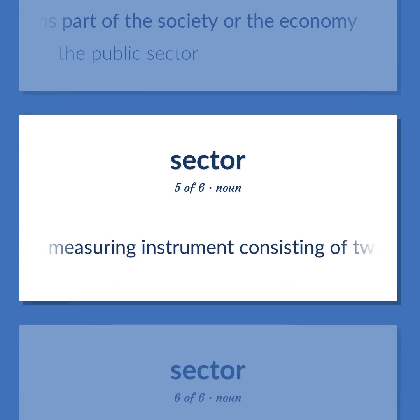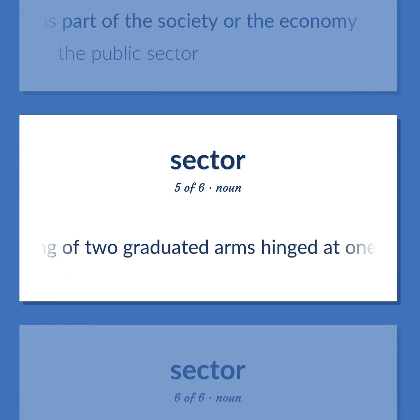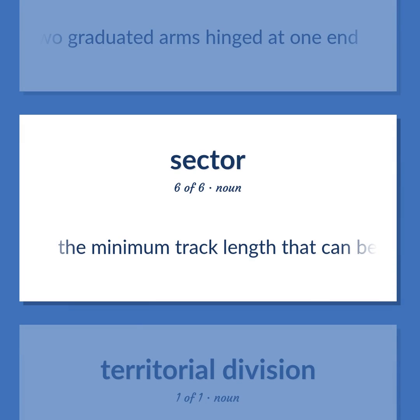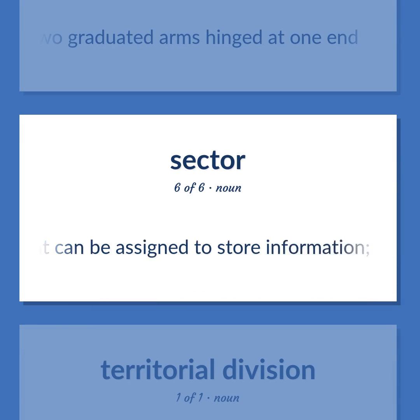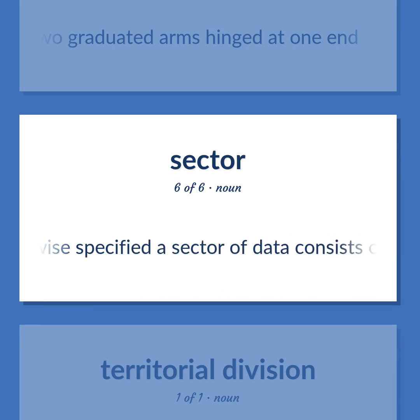Sector: a measuring instrument consisting of two graduated arms hinged at one end. Also, the minimum track length that can be assigned to store information — unless otherwise specified, a sector of data consists of 512 bytes.